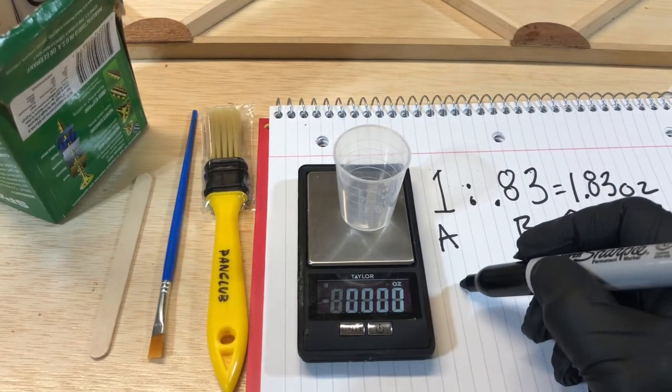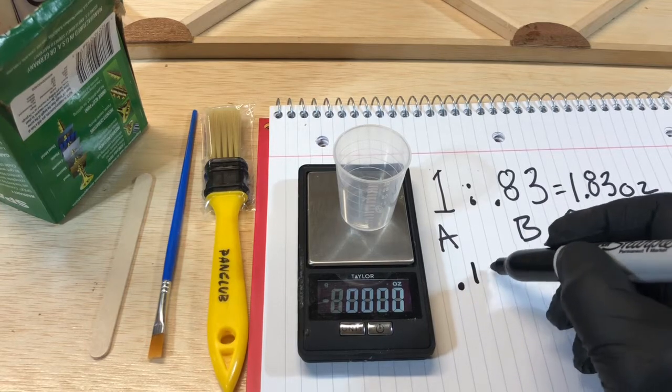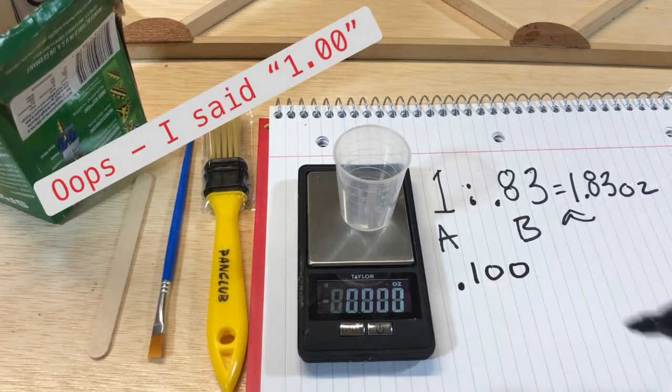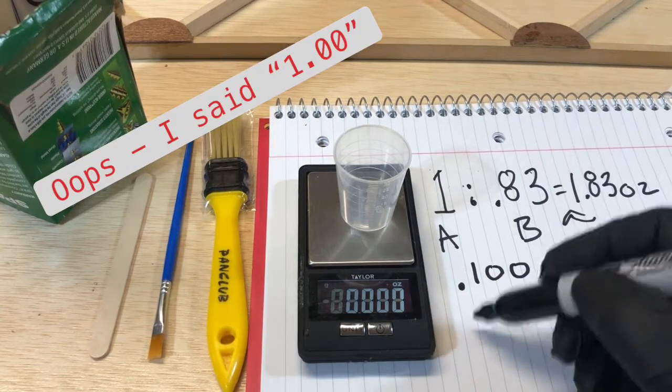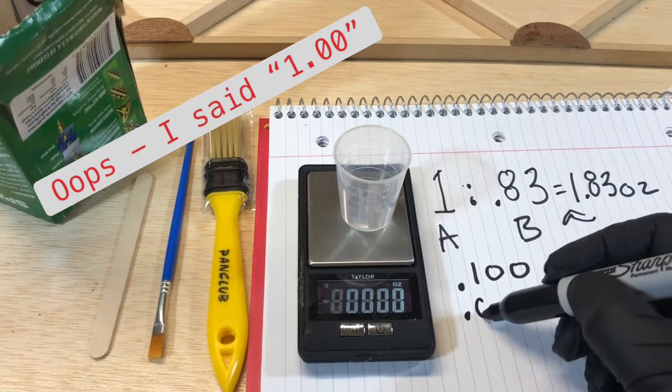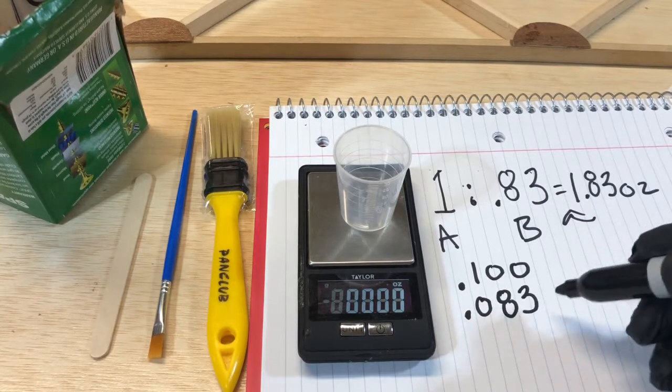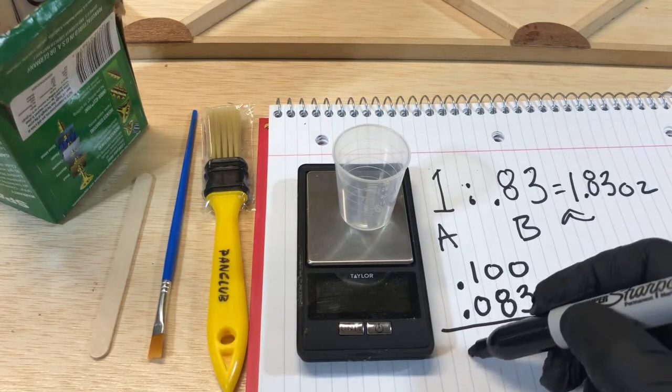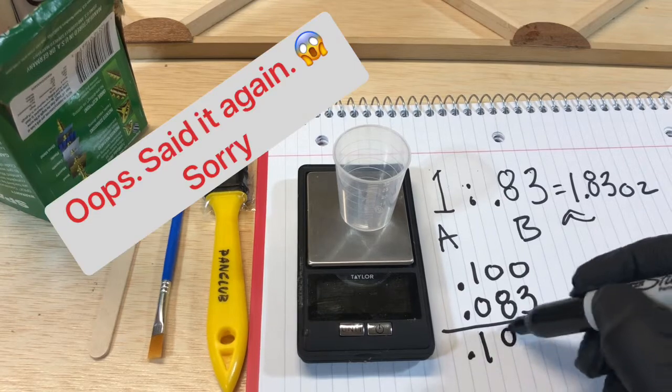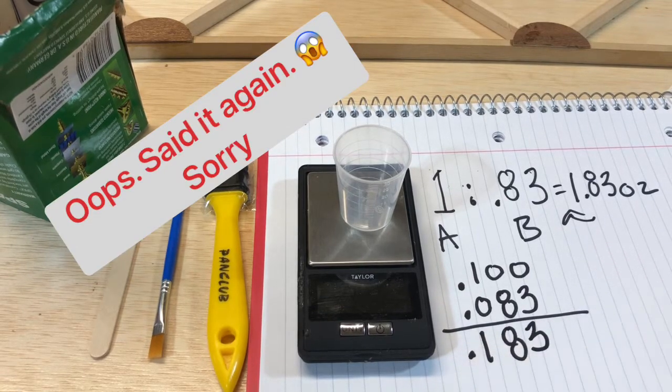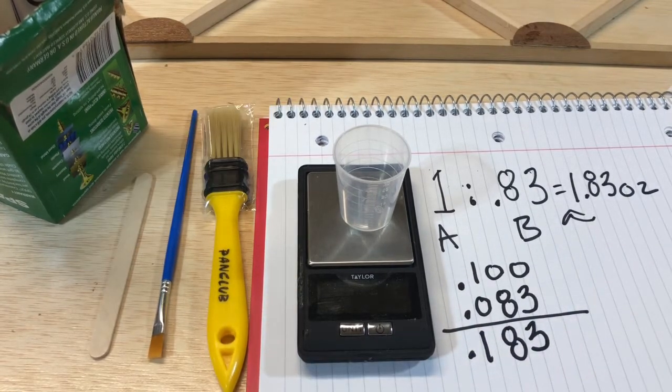So part A in the cup would be filled to one point zero zero, and in the cup you would then add decimal zero eight three. This would give you a total of one point eight three measured in the cup. Okay, I'm going to show you what that looks like right now.